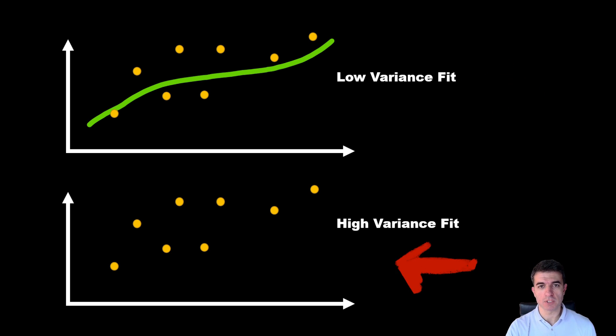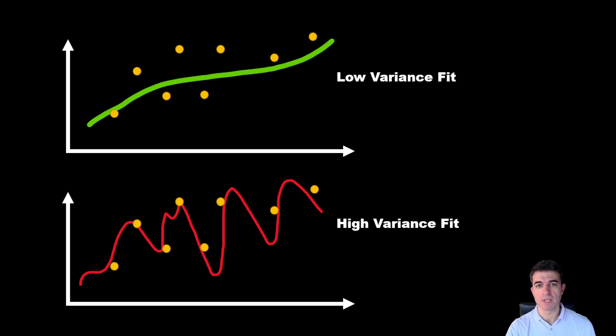While the second, the bottom example, is a high variance fit, which is also called overfitting, and as you can see it passes almost through all the training points, but it will fail to describe any new point on the chart, because it's so twisted in a way to fit only the training points. And this is the case we usually want to avoid in trading, and in any machine learning problem.